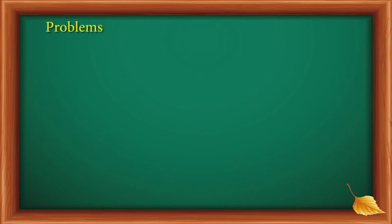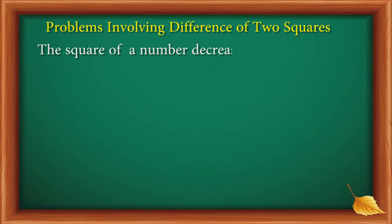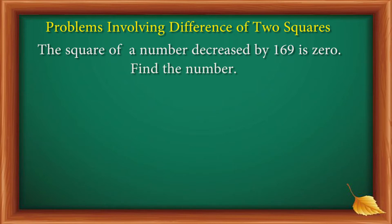Let's have another example — problems involving difference of two squares. The square of a number decreased by 169 is 0. Find the number. The given is x squared minus 169 is equal to 0.